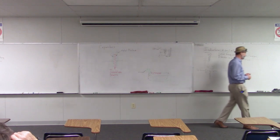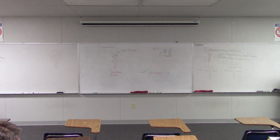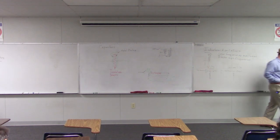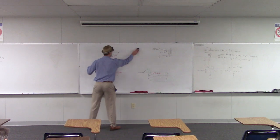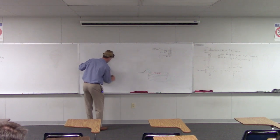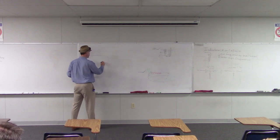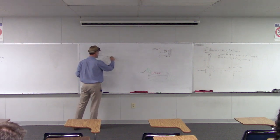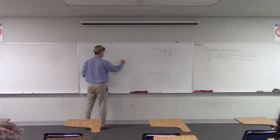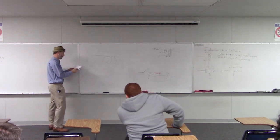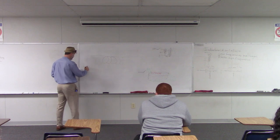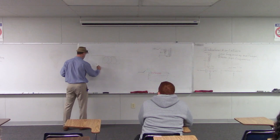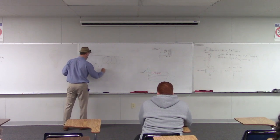Every coil of wire is an inductor whether you want it to be or not. There is a formula to calculate inductance: L equals N squared times A over little L, times some constants. Where L is the inductance, N is the number of coils, A is the cross-sectional area, and little L is the length of the coil.